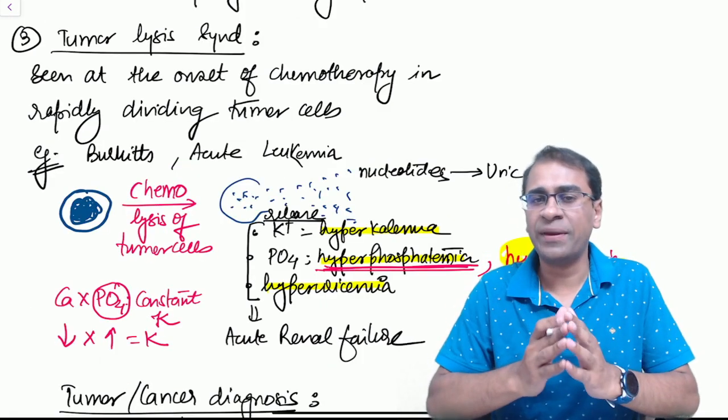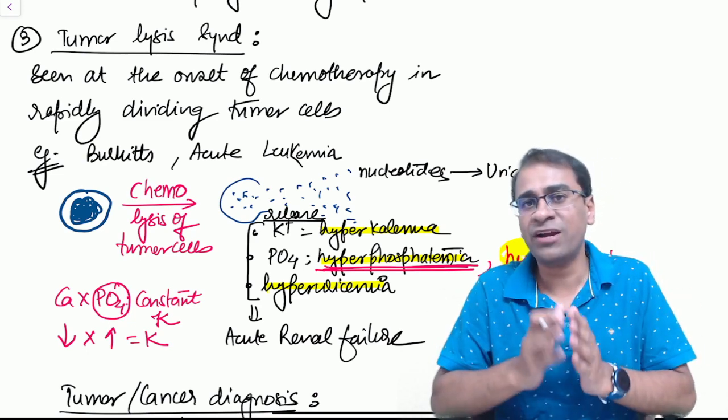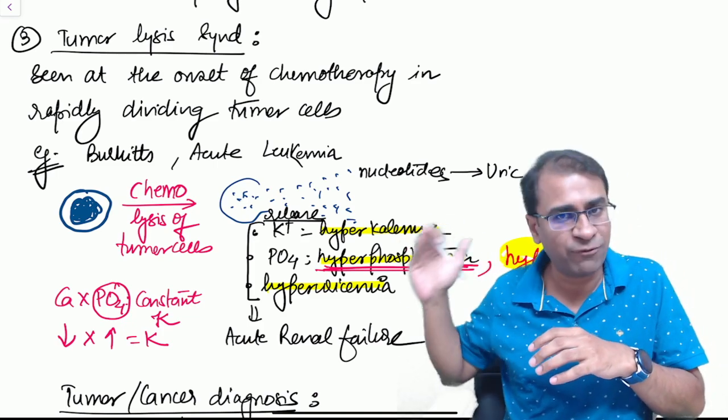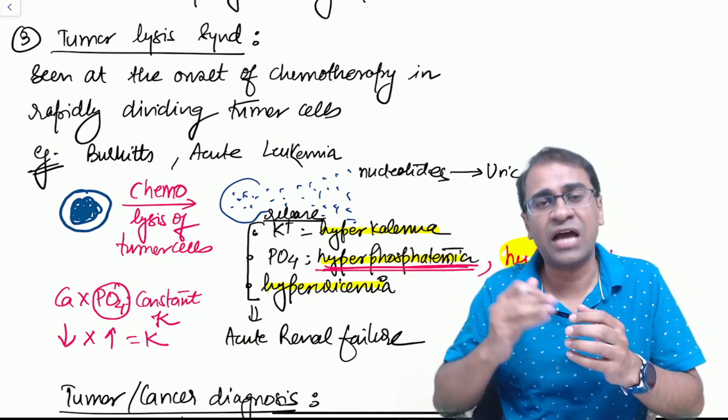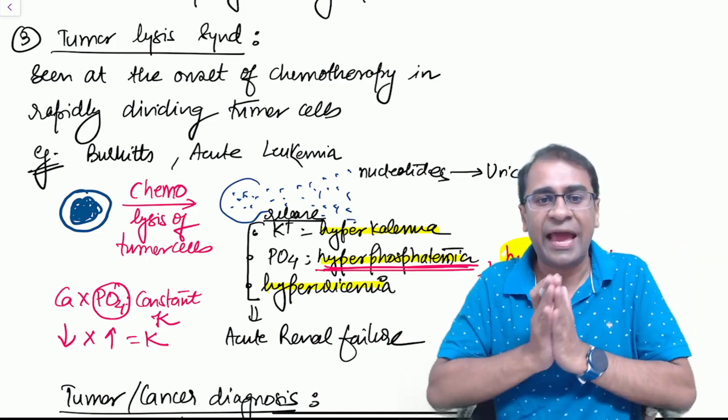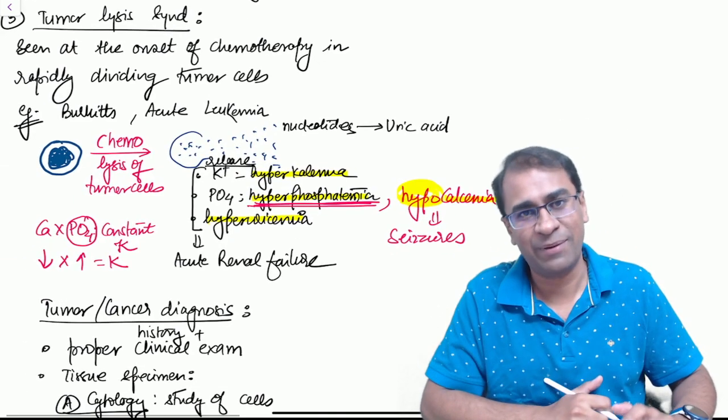A very important topic in cancer is tumor lysis syndrome. When the tumor cells break with the effect of chemotherapy, the potassium comes out causing hyperkalemia, phosphate comes out causing hyperphosphatemia, uric acid comes out causing hyperuricemia. But remember when the phosphate increases, the calcium must decrease, and hence the fourth finding is hypocalcemia and not hypercalcemia. This is very important.